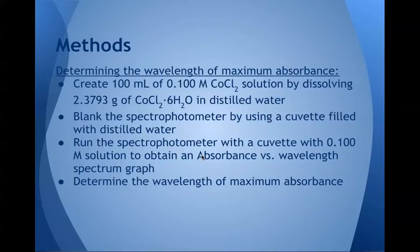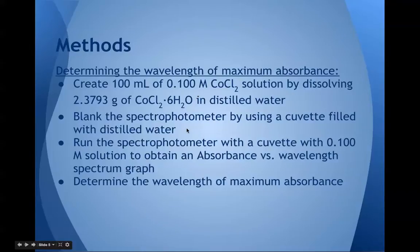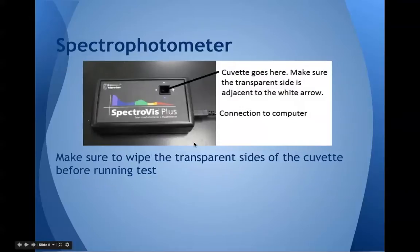Some methods: To determine the wavelength of maximum absorbance, we first created a 0.1 molar cobalt chloride solution. Then we blanked the spectrophotometer using a cuvette filled with distilled water. We ran the spectrophotometer with a cuvette containing the 0.1 molar solution to obtain an absorbance-versus-wavelength spectrum graph, and used this graph to determine the wavelength of maximum absorbance. Here's the spectrophotometer we used — you can see the hole where the cuvette goes, and we made sure the transparent side is adjacent to the white arrow. We also made sure to wipe the transparent sides of the cuvette before running each test.